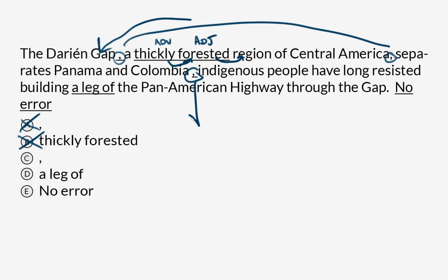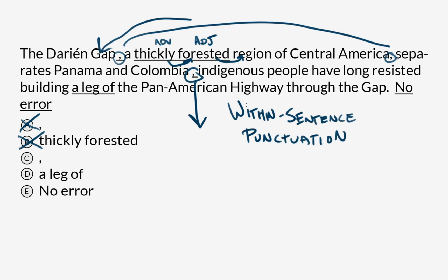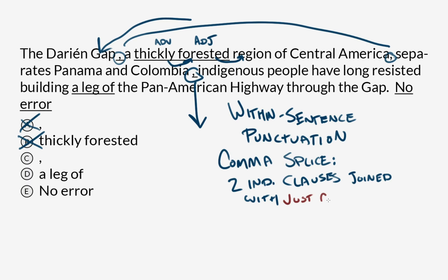Now we come to the comma, and this is our error. This is a within-sentence punctuation question, and specifically the kind of error being committed here is called a comma splice — an error that occurs when you join two independent clauses with just a comma. How do we know these are two independent clauses? Let's look for subjects and verbs. The Darien Gap is the subject, and 'separates' is the verb — that's clause one. 'Indigenous people' is the subject, and 'have resisted' is the verb — that's clause two. These two things could be sentences on their own, united incorrectly by a comma. So there's our error.